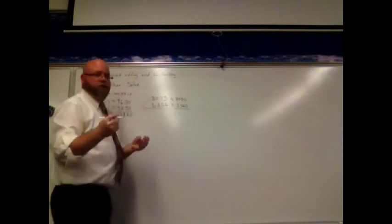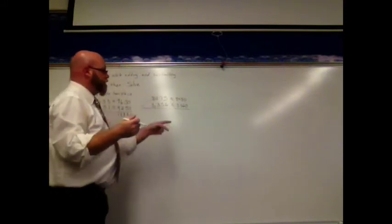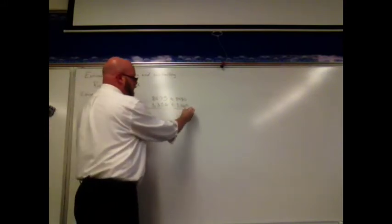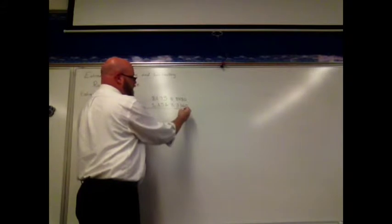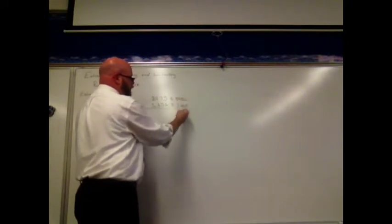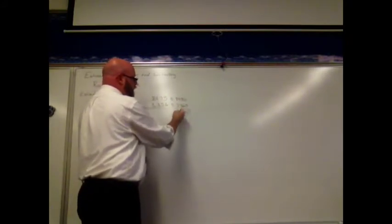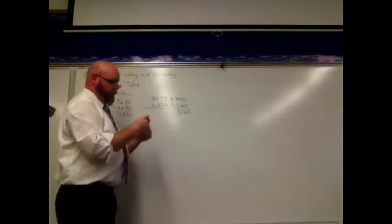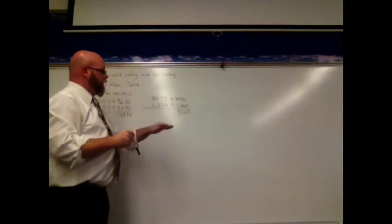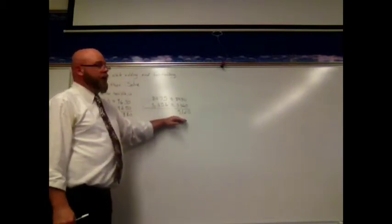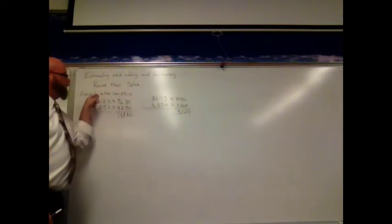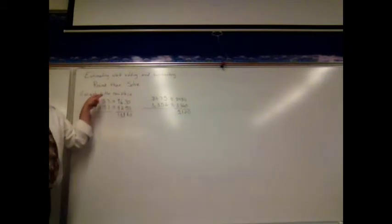And now I can subtract: 0 minus 0 is 0, 8 minus 6 is 2, 4 minus 3 is 1, and 8 minus 3 is 5. So my estimated answer is 5,120 when I estimate to the nearest tens place.